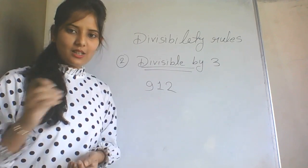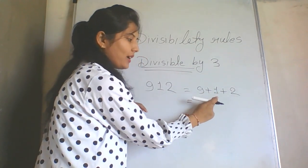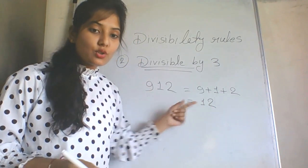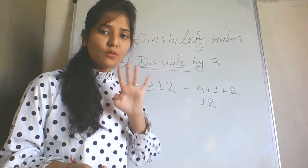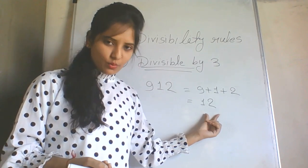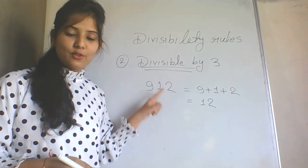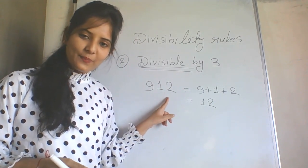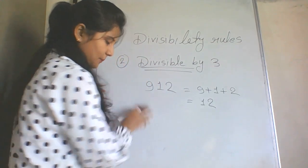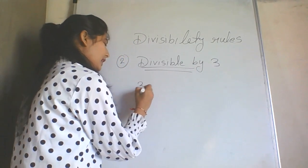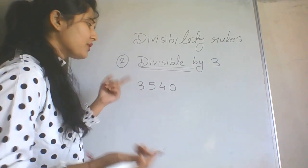We add all the digits of the number. For 912: 9 + 1 + 2 = 12. Now we check whether 12 comes in the table of 3. Yes — 3 × 4 = 12 — so 12 comes in the 3 times table. This means 912 is divisible by 3, and when divided by 3 the remainder will be zero.